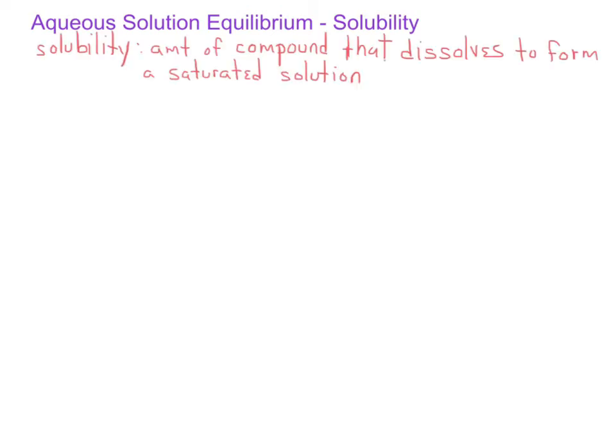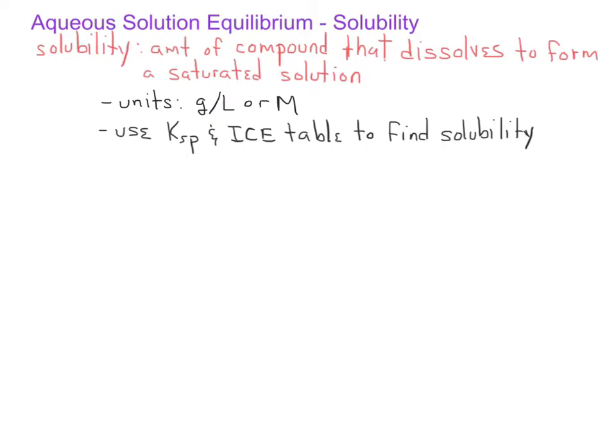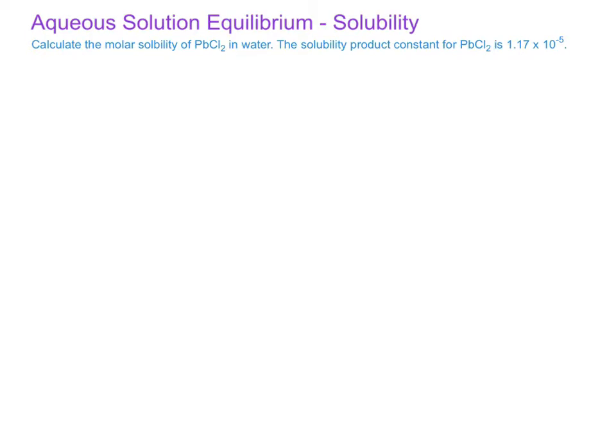When we talk about solubility, we can define it as the amount of a compound that dissolves to form a saturated solution. The units we'll use will either be grams per liter, but more generally we'll use molarity as the units for solubility. We can find the solubility for ionic compounds by using our Ksp values and ICE tables. In this problem, we'll calculate the molar solubility of lead chloride in water, given that the Ksp for lead chloride has a value of 1.17 times 10 to the negative 5th.